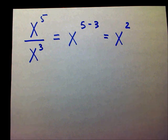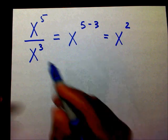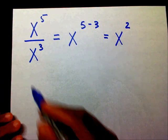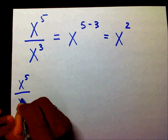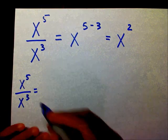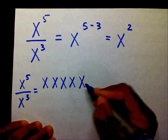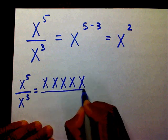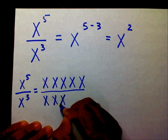If you've been watching my videos, you know that I have this thing for showing what things really mean. So let's look at what x to the fifth over x to the third really means. X to the fifth means x times x times x times x times x, all over x to the third, which really means x times x times x.